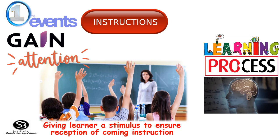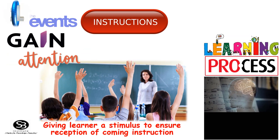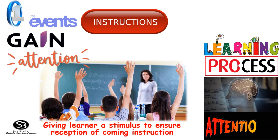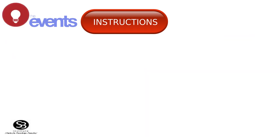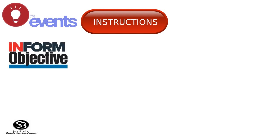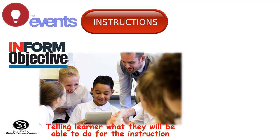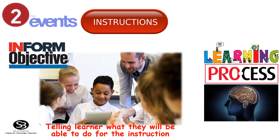The first event is Gaining Attention — giving the learner a stimulus to ensure the reception of coming instruction. The learning process involved here is attention. The second event is Informing the Learner of the Objective — telling the learner what they will be able to do after the instruction. The learning process involved in this step is expectancy.